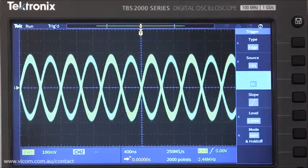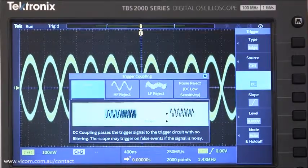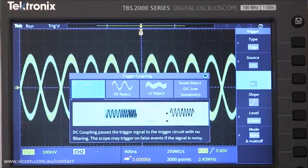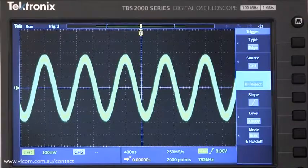I can choose HF reject option out of the coupling menu, and the scope will filter out high frequency noise from the trigger source. This gives me a stable, perfectly triggered waveform.